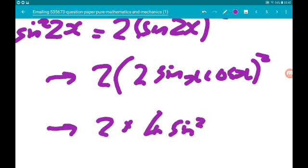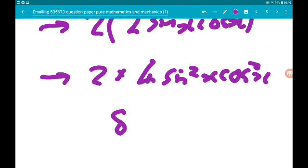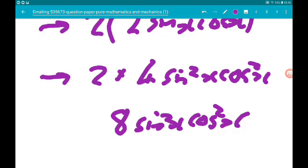squared. And then finally, 2 times 4 is 8 sin squared x cos squared x. Boom.